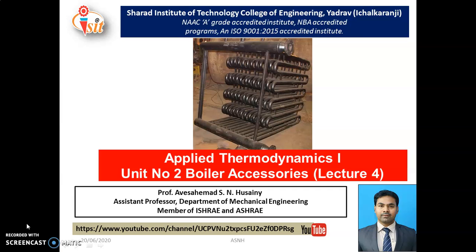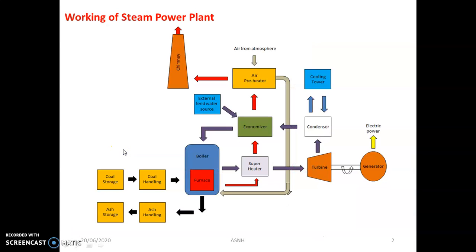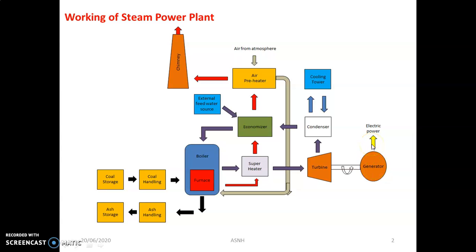In lecture number four we will discuss boiler accessories. Let us start with the working of the steam power plant. We know that the most important component in the steam power plant is the boiler. The main function of the boiler is to convert water into steam, and that steam is utilized in the steam turbine to produce mechanical energy in terms of shaft rotation, and that shaft of the turbine is connected to the alternator of the generator in order to produce electricity.